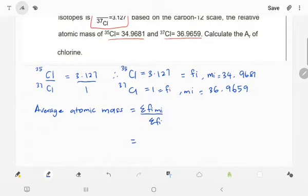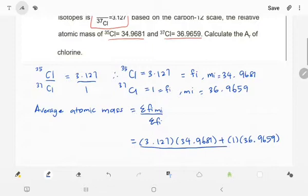And then we substitute. For Cl-35 is 3.127 times 34.9681 plus 1 times 36.9659 for Cl-37 over the total of Fi, which is 3.127 plus 1.